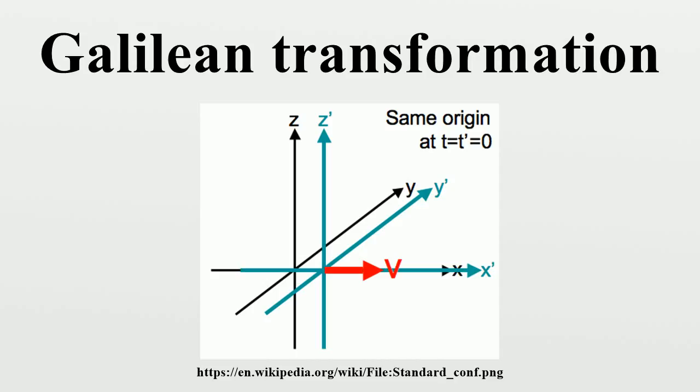Where h is the generator of time translations, pi is the generator of translations, ci is the generator of Galilean boosts, and lij stands for a generator of rotations.